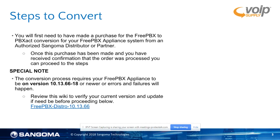We're going to go through a couple quick steps before you do your conversion. First, you will need to have made a purchase for the FreePBX to PBXact conversion for your FreePBX appliance system from an authorized distributor like VoIP Supply. Once this purchase has been made, you'll receive confirmation that the order was processed and you can proceed to setup. There is a special note here — you need to be on version 10.13.66-18 or newer. If you're not, you're going to want to go through consecutive upgrades until you get to that version before doing this conversion.